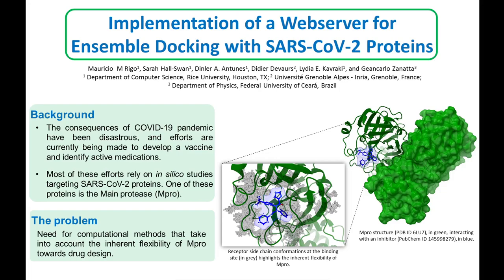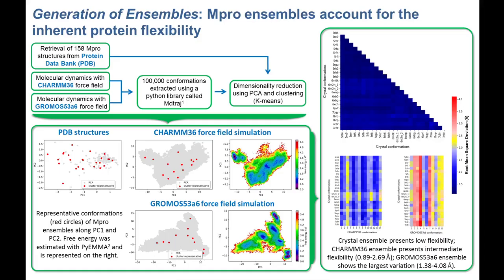Here we present a web server for drug screening based on molecular docking and ensembles of protein conformations. The first part of this project was to generate ensembles. For that, we recovered 158 SARS-CoV-2 structures from the Protein Data Bank and 100,000 conformations from 2 microseconds of molecular dynamics using CHARMM-36 and GROMOS 53A6 force fields.